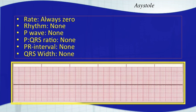You also have something that a lot of people refer to as an agonal rhythm, where you have a patient that appears almost asystolic and then every once in a while they'll have a big, wide, ugly beat. They really won't have a pulse to go along with that — that's just some pulseless electrical activity. And that is not asystole. But eventually, if they don't get resuscitated, they will be in asystole.